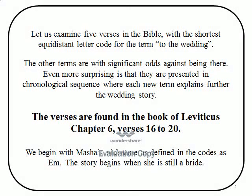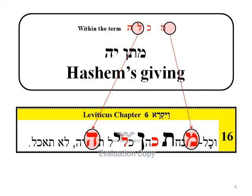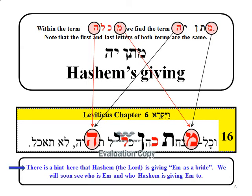We begin with Masha's nickname as defined in the codes: EM. The story begins when she is still a bride. The code says EM is a bride. Within the term EM KALA, or 'EM is a bride,' we find the term 'Hashem's giving.' Note that the first and last letters of both terms are the same. There is a hint here that Hashem is giving EM as a bride.